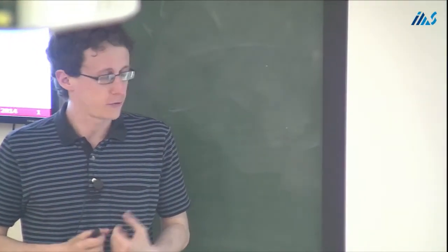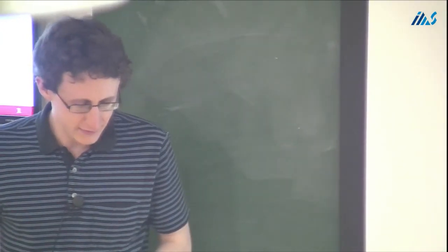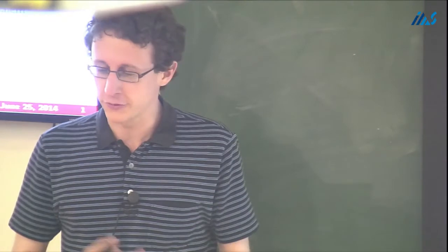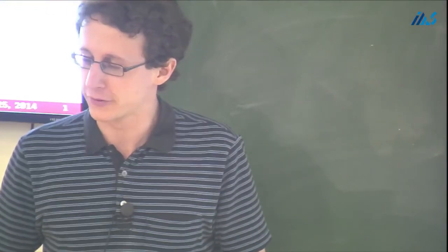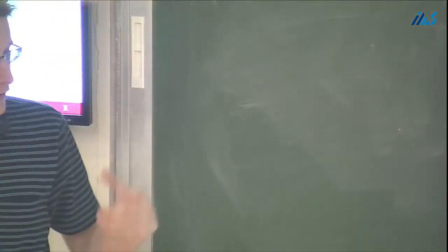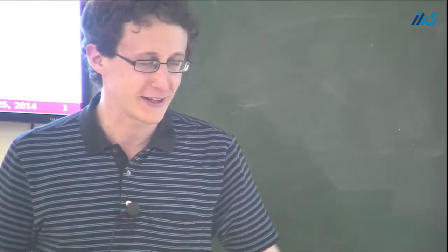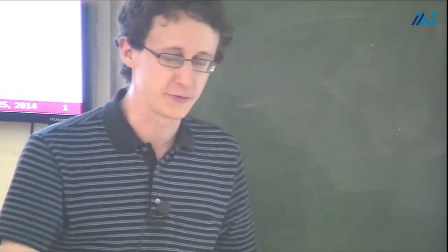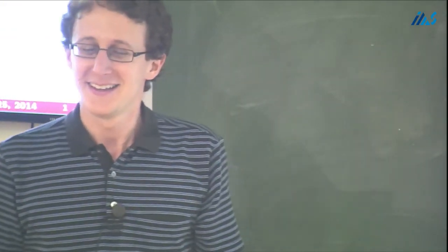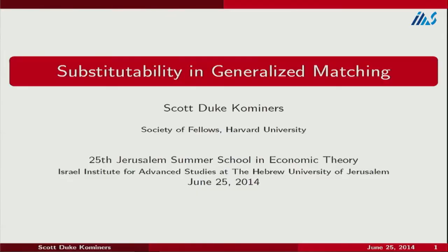When I first saw the matching with contracts paper in Al's class years ago, we saw Kelso-Crawford and Hatfield-Milgram matching with contracts. It was like one of these situations in a gold rush where people were throwing stones against nearby rocks, the crust would fall off, and there would be this huge vein of gold. It was amazing because it organized all of the structure for me in a way I hadn't had before, making it possible to see where all the other matchings were in a very broad way.